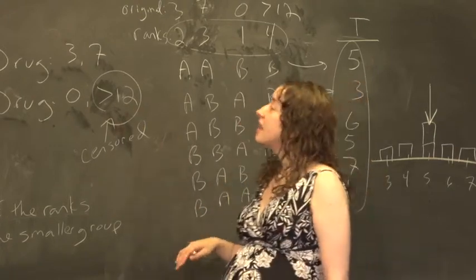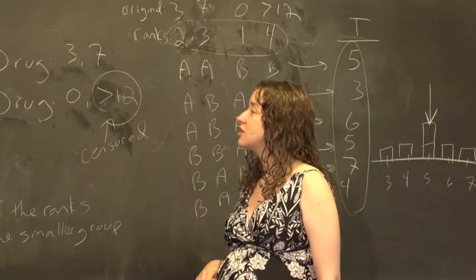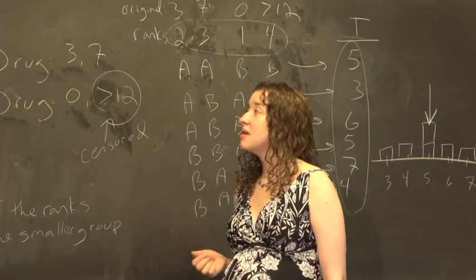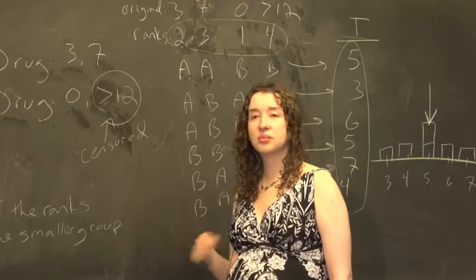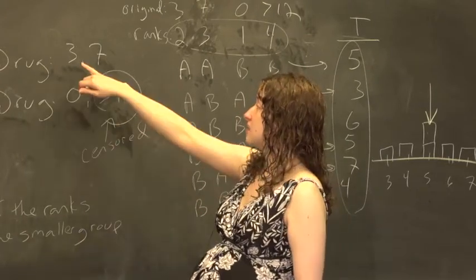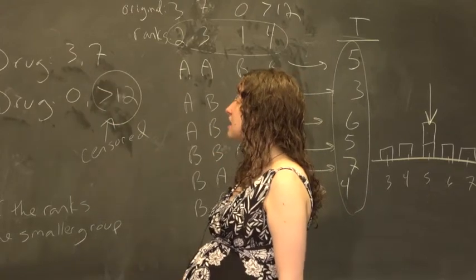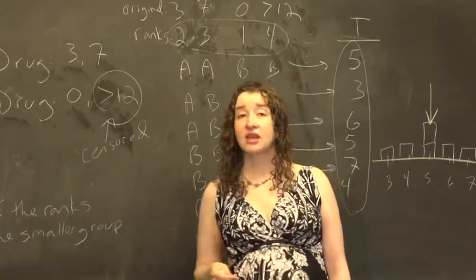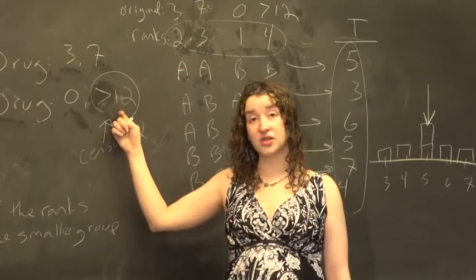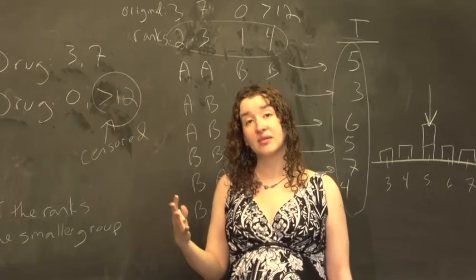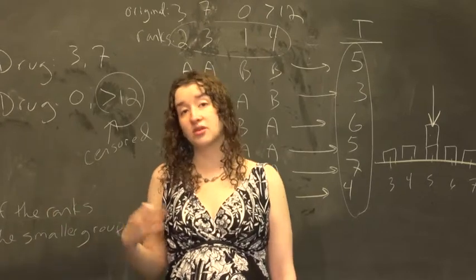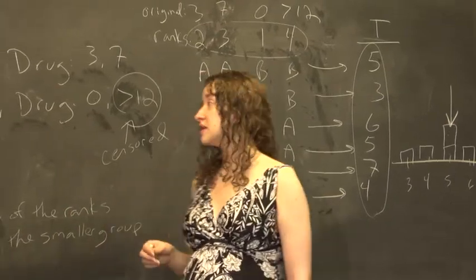But you could also have censored data if, for example, these are measurements of how long it takes people to do some task. Maybe we are asking a bunch of students to complete some sort of memory task, and we're timing them to see how long it takes. And one person takes zero minutes, and one person takes three minutes, one person takes seven minutes, and somebody else is still thinking about it when 12 minutes are up. That person's values are censored. We don't know how long they would have taken. Similarly, if we were interested in how long people take to run a mile, there might be some people who just don't finish within the data collection time. Those values would be censored.